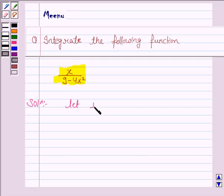Let I be the integral x upon 9 minus 4x square dx. Now here we see that the derivative of 9 minus 4x square is minus 8x which contains x.